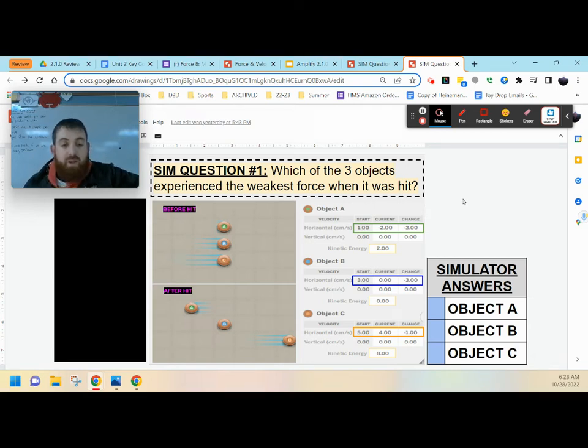Hey everyone, Mr. Regan here, and today we're looking at our sim question number one. Which of the three objects experienced the weakest force when it was hit?